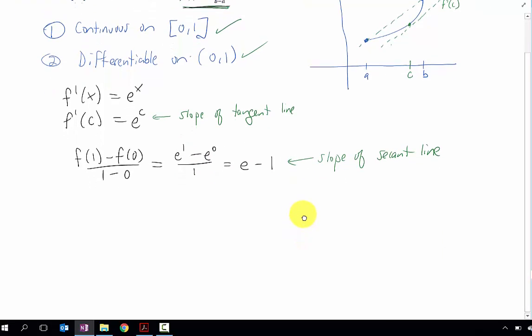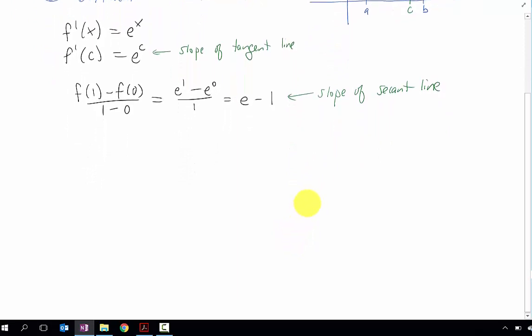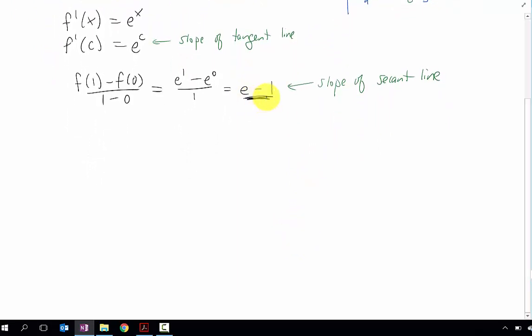And the mean value theorem says that since our function is continuous and differentiable on this interval from zero to one, that somewhere along the line, this slope of the secant line must be equal to the slope of the tangent line. If we want to find what that c is, that means we need to solve this equation algebraically for c.